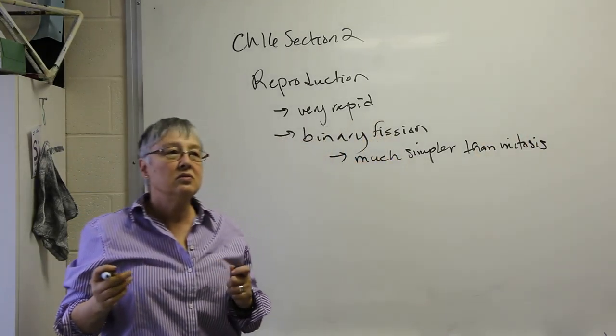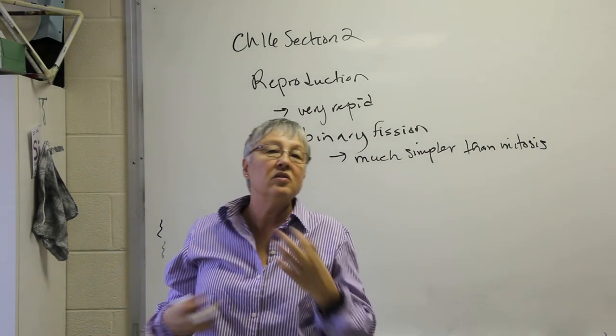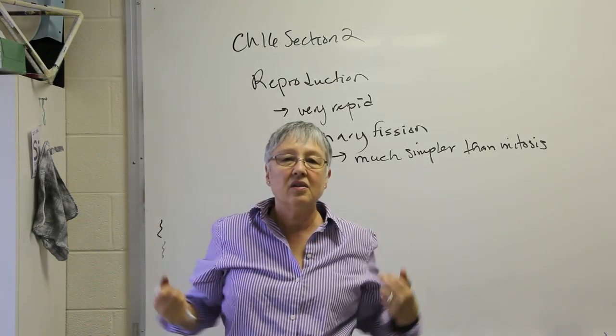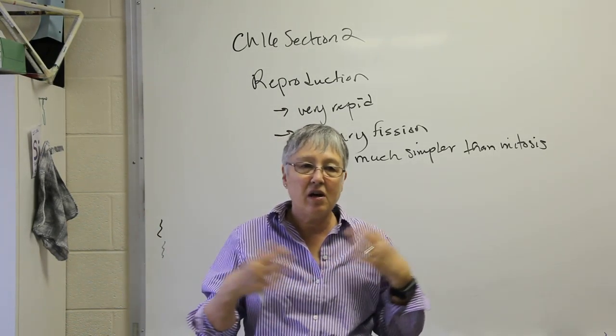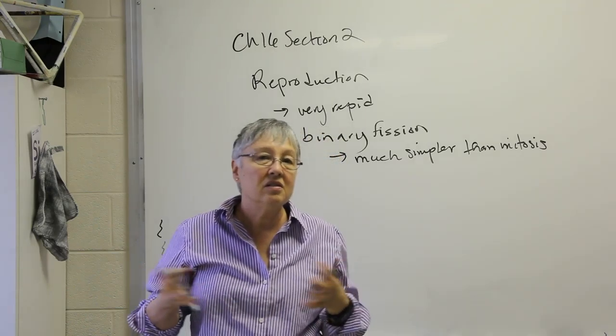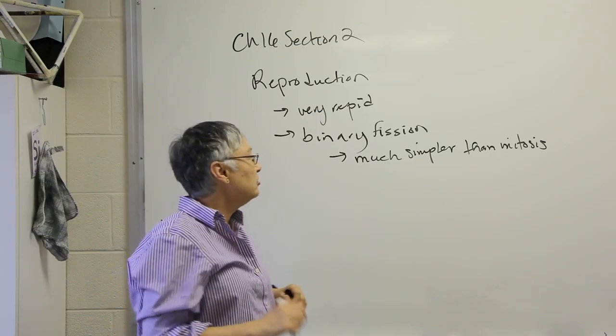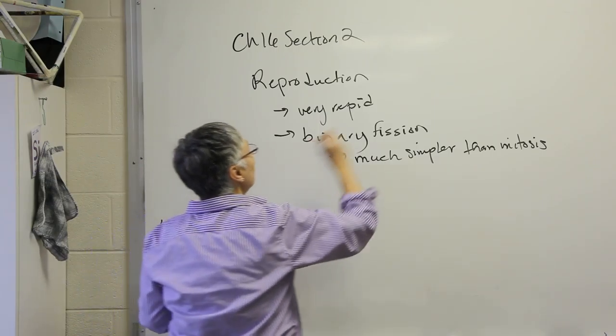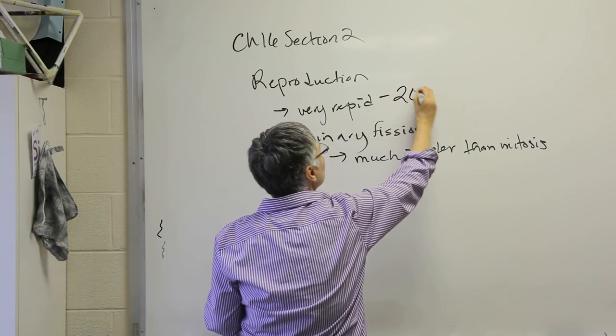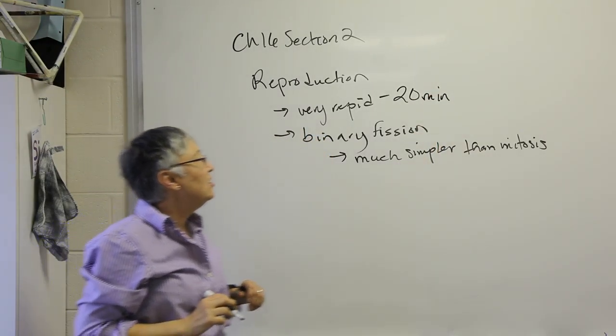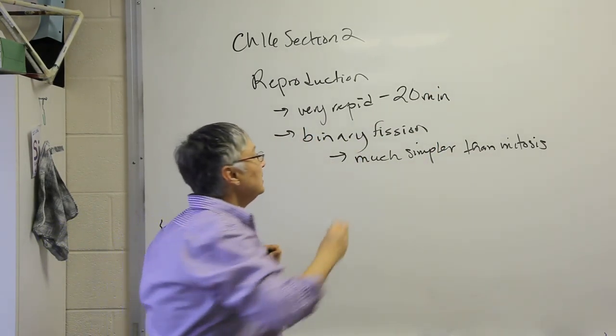We don't have to create a spindle fiber apparatus to separate the chromosomes. We don't have to involve disintegrating or getting rid of the nuclear membrane, all sorts of other factors. So when I say very rapid, typically under the right conditions, a bacterial cell will divide every 20 minutes.